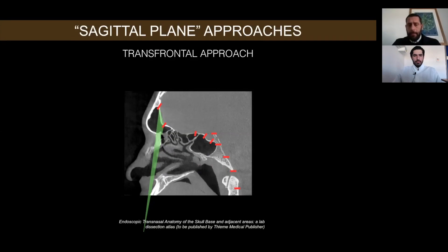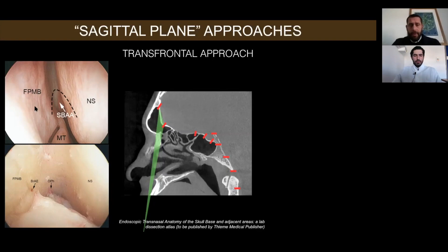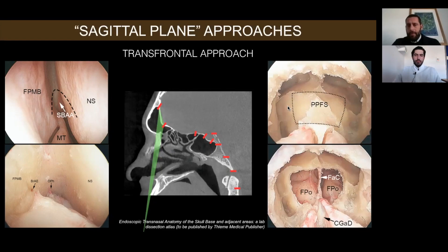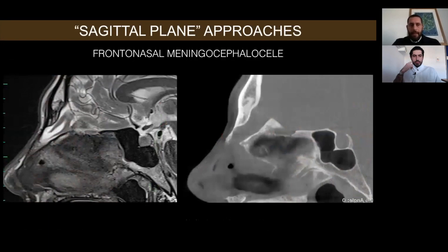The first approach described in the literature is the transfrontal approach, which allows us to reach the posterior plate of the frontal sinus looking at the nasal vault. Our landmarks are the septal branch of the anterior ethmoid artery and the first olfactory filia. We perform a Draf III procedure to expose the posterior wall of the frontal sinus, and after that, if needed, we can open the dura and expose the intracranial structures.